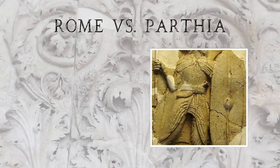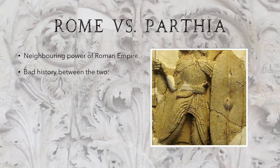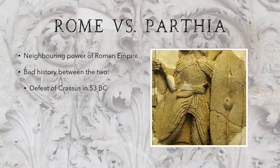Just a bit of background to start us off. Parthia wasn't a Roman province — instead it was a neighbouring power, and Rome had a long, tough history with Parthia. Firstly, we had the story of Crassus, who was a member of the first triumvirate. He was defeated in the Battle of Carrhae in 53 BC, where he lost three legions and the standards — the symbols of those legions — were captured. This was the greatest humiliation a legion could suffer, so it was a huge and humiliating defeat for the Romans.